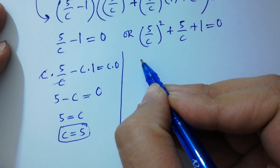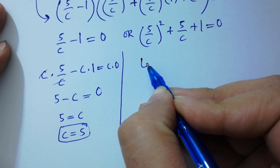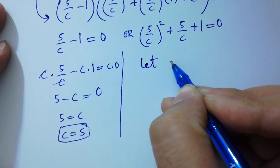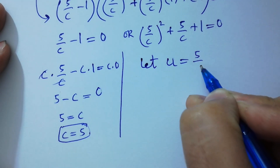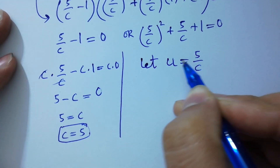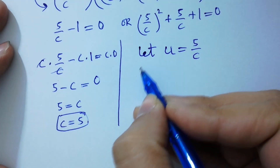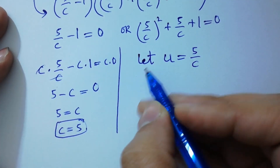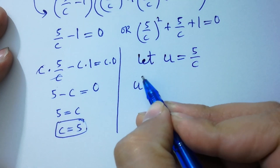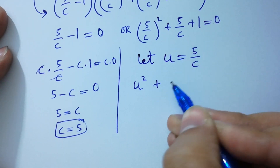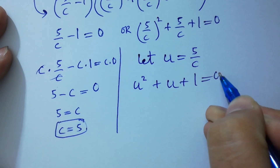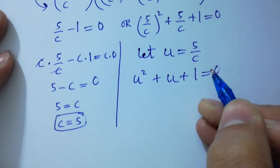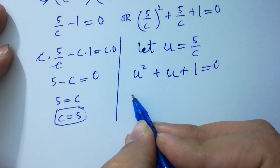So for this, let u equal to 5/c. We have u² plus u plus 1 equals 0. Apply here the quadratic formula.